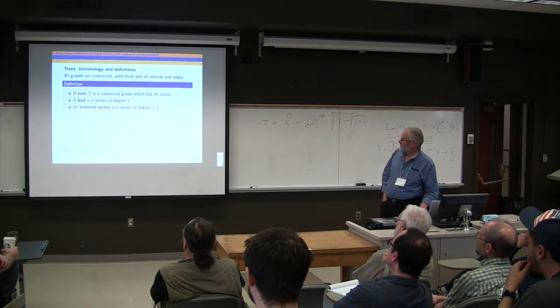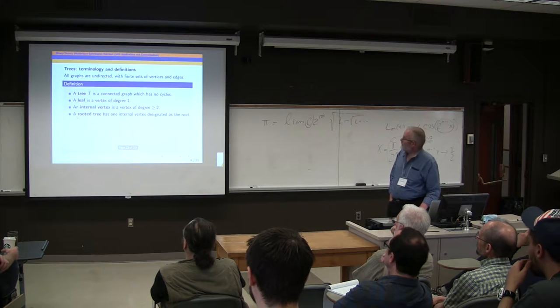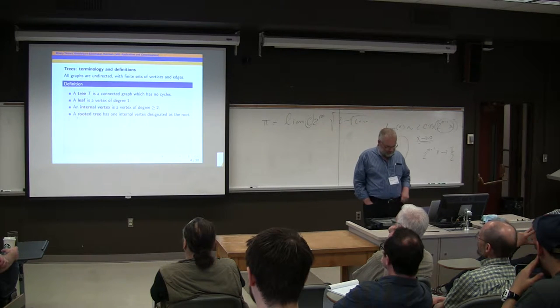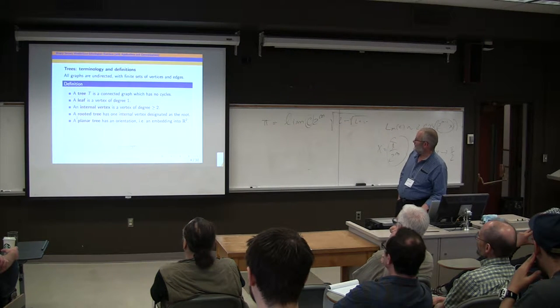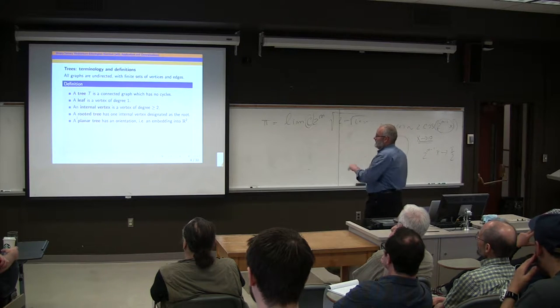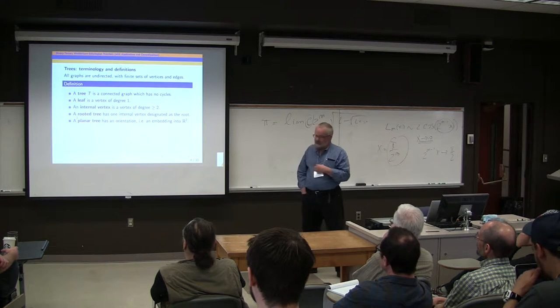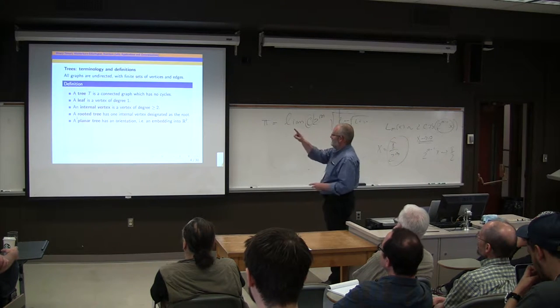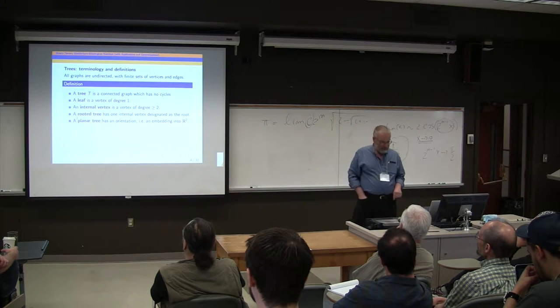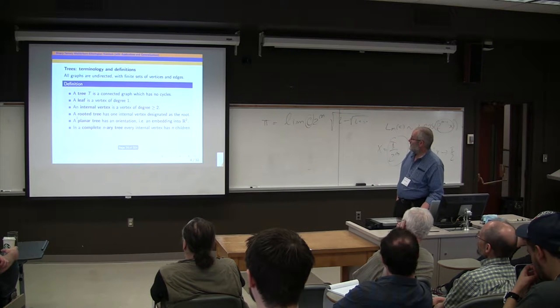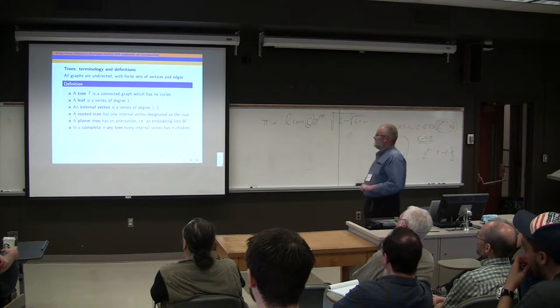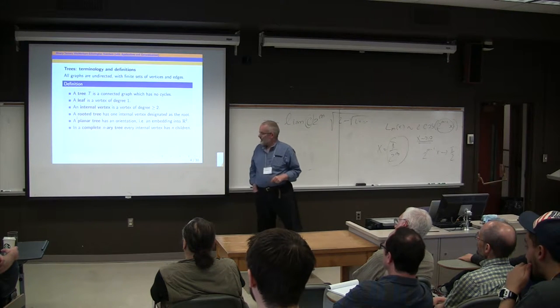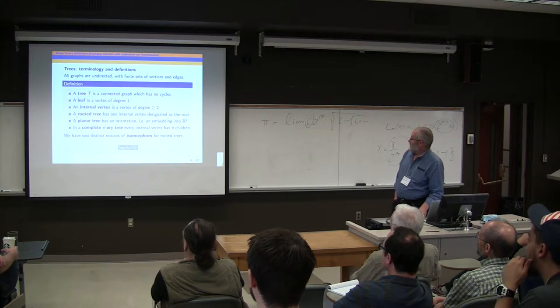An internal vertex is a vertex of degree at least two. A rooted tree has one internal vertex designated as the root. And planar tree has an orientation, that's to say an embedding into R2, which you can also think of as an enumeration of the leaves from left to right. And a complete m-ary tree is one in which every internal vertex has exactly m children.